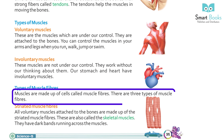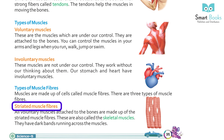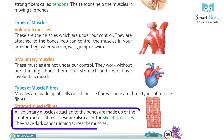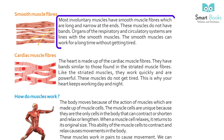Types of muscle fibers: muscles are made up of cells called muscle fibers. There are three types. Striated muscle fibers: all voluntary muscles attached to the bones are made up of striated muscle fibers, also called skeletal muscles. They have dark bands running across the muscle. Smooth muscle fibers: most involuntary muscles have smooth muscle fibers which are long and narrow at the ends. These muscles do not have bands. Organs of the respiratory and circulatory system are lined with smooth muscles. Smooth muscles can work for a long time without getting tired.